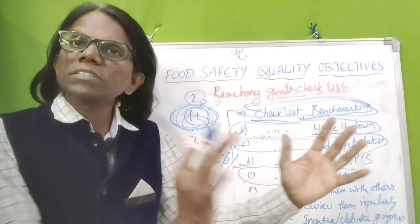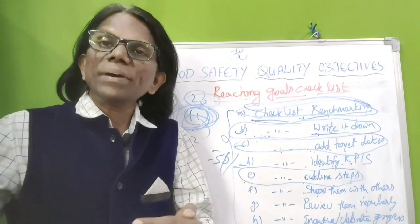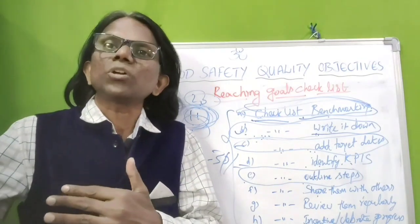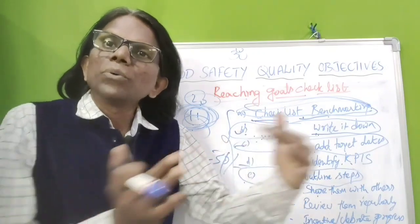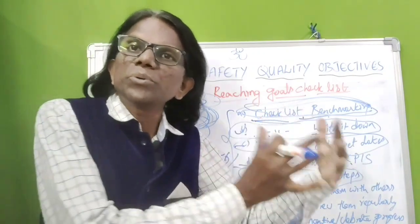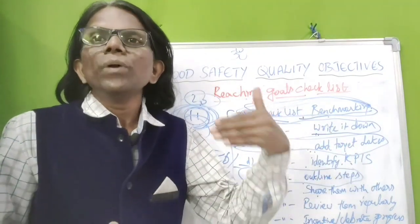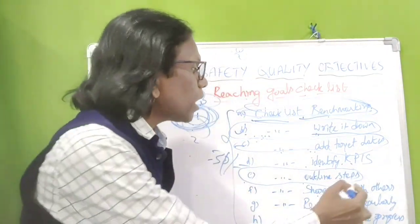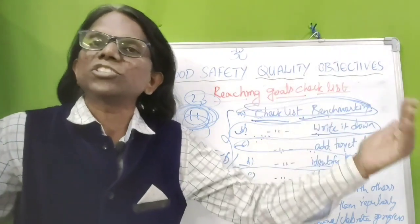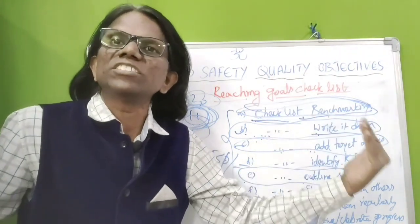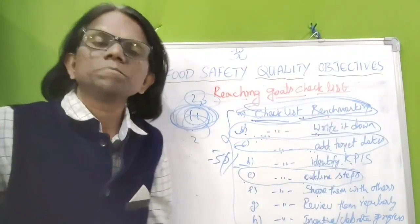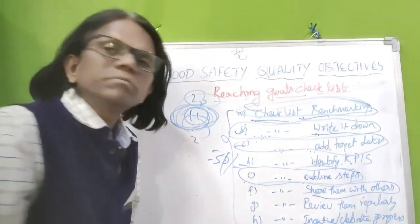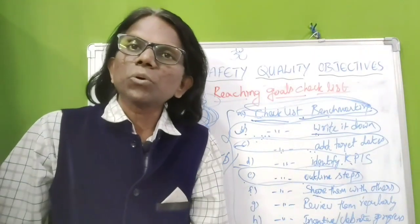Checklist for outline steps: once the goal is established, prepare an action plan for the next week, next month, or coming quarter — what you will do and how you want to accomplish the goal. Prepare a checklist of steps for the coming months and weeks. Then, share the goal with relevant team members and include new persons relevant to the goals.